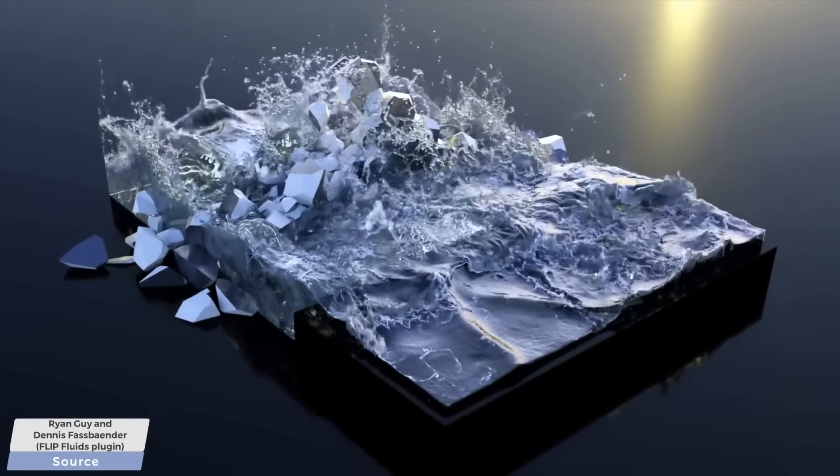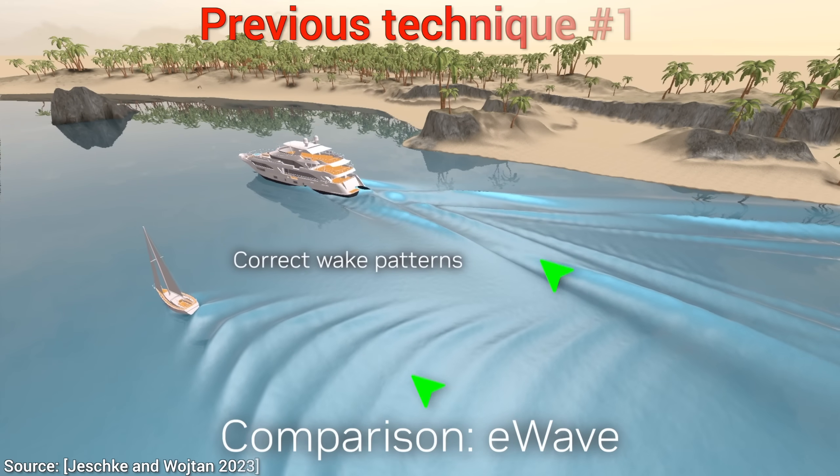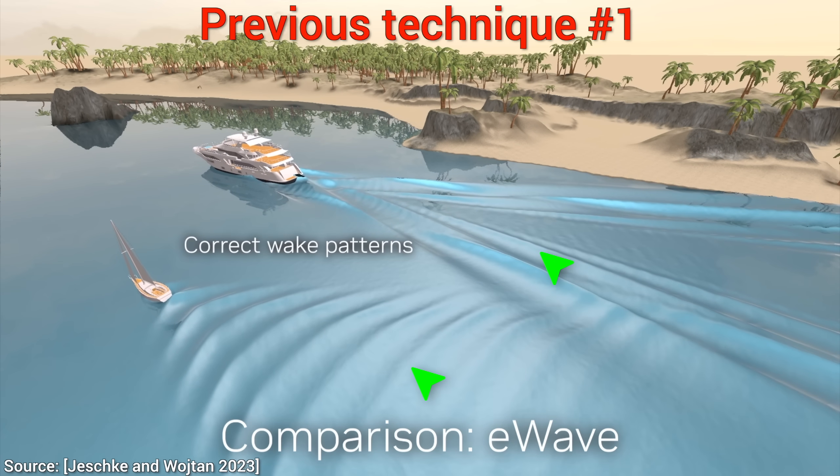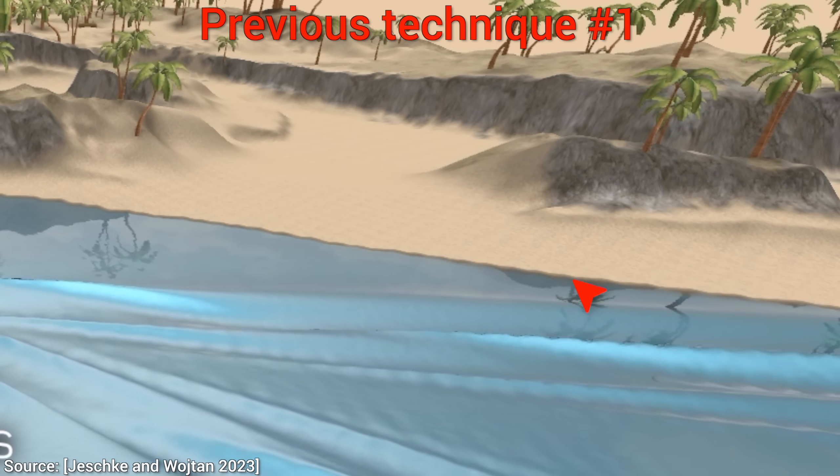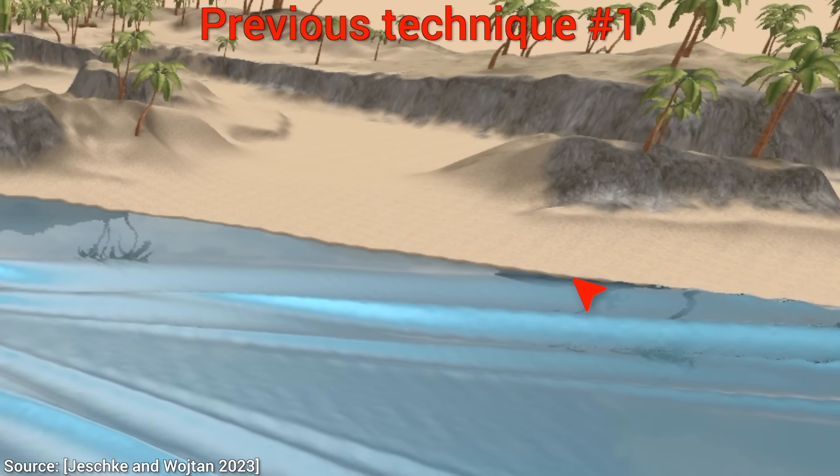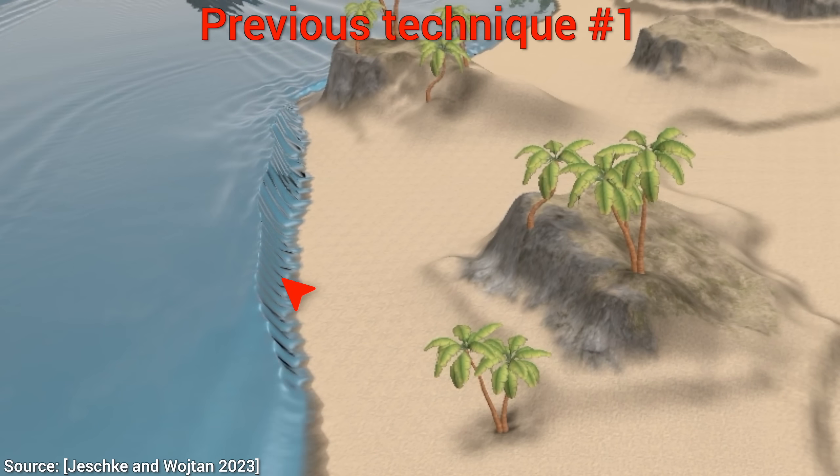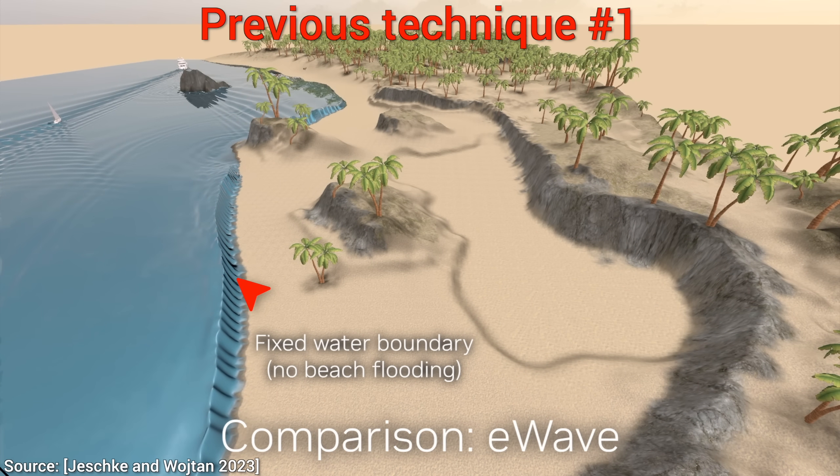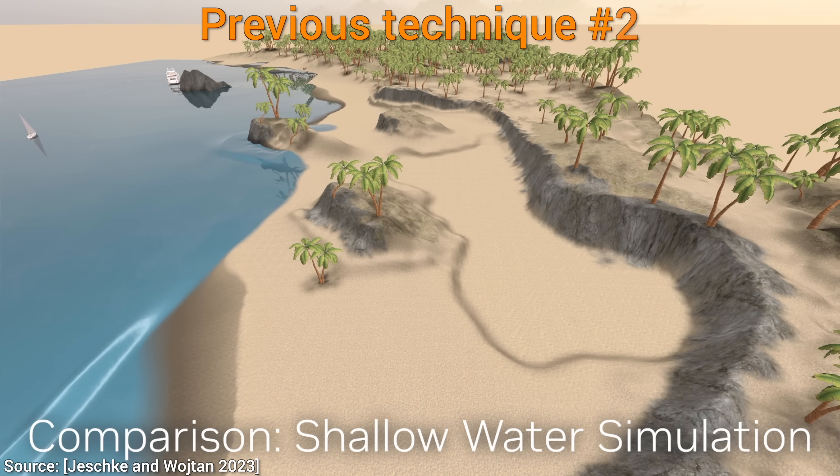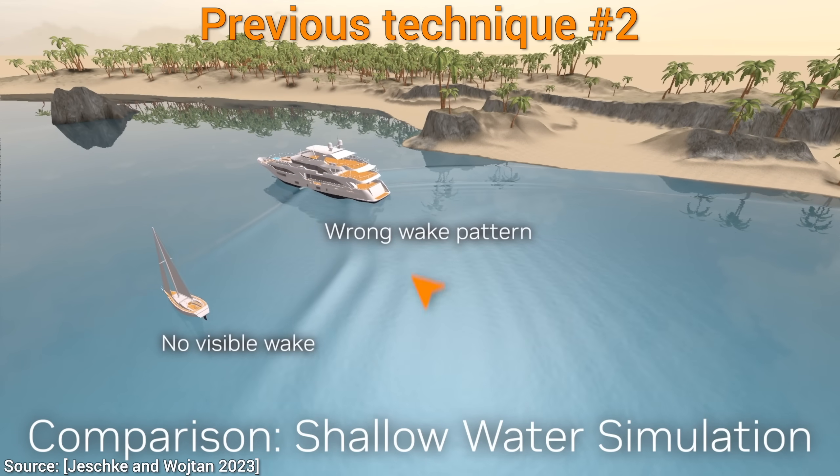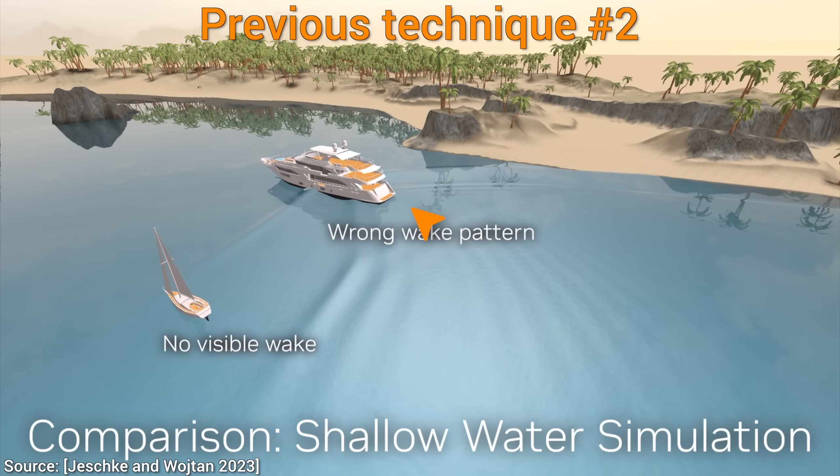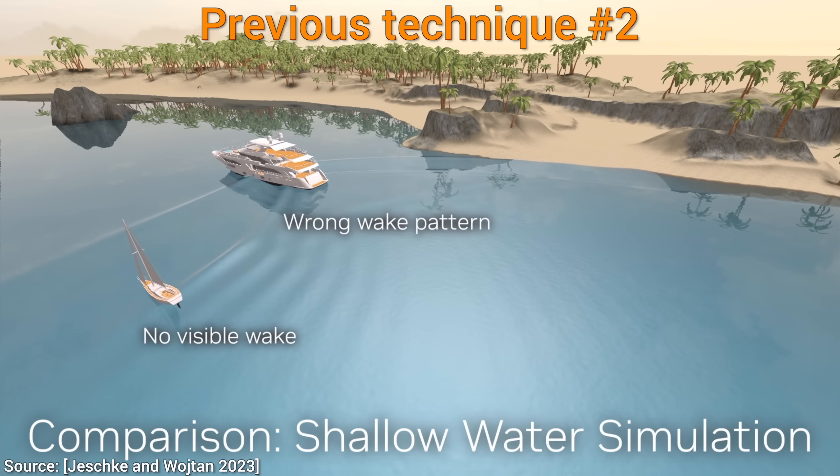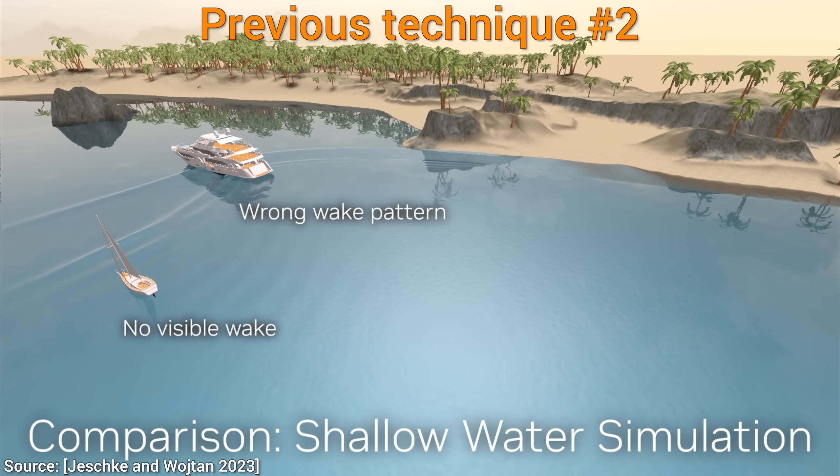Is simulating that even possible? One previous technique is great at simulating wake patterns. These look great. However, look, on the shore, the water behaves incorrectly. It essentially bounces back as if it hit a wall. This part can be simulated better with a shallow water simulation. But? Oh no! In that case, the boat wakes are completely off. Hmm, no one technique can perform both correctly.